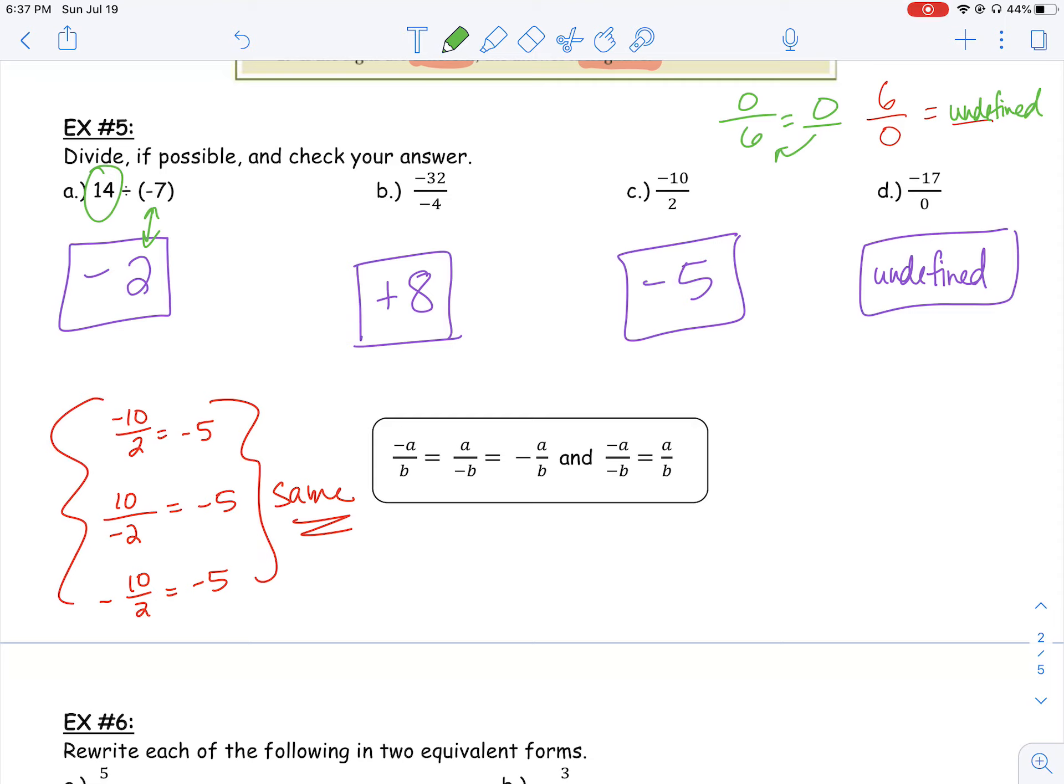All right, the next little idea I want to talk about is what happens when the negative is in the numerator versus in the denominator. Well, if you look at this first one, I have a negative 10 divided by positive 2. Isn't that negative 5? But in the second one, I have a positive 10 divided by a negative 2. Well, isn't that still just negative 5? And in the last one, I have 10 divided by 2, and then the opposite of that. Well, 10 divided by 2 is 5, and the opposite of 5 is negative 5. So all three of these give us the same answer.